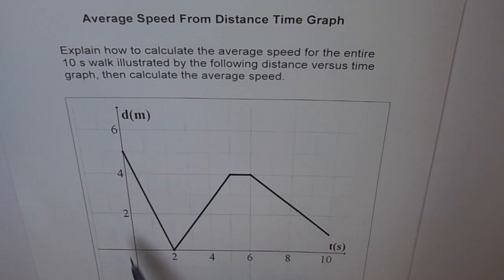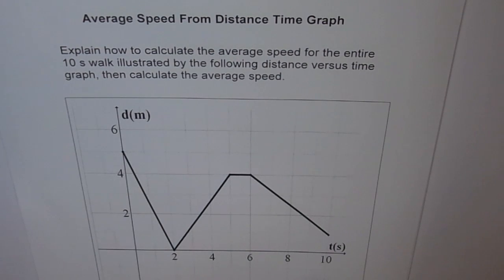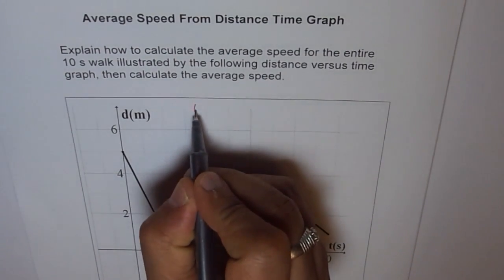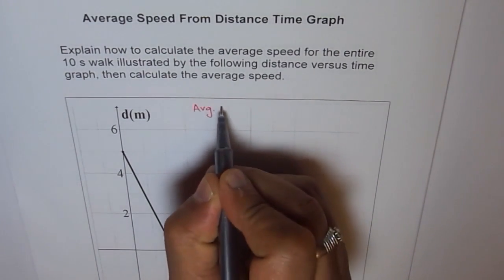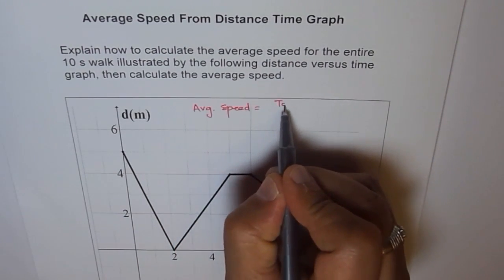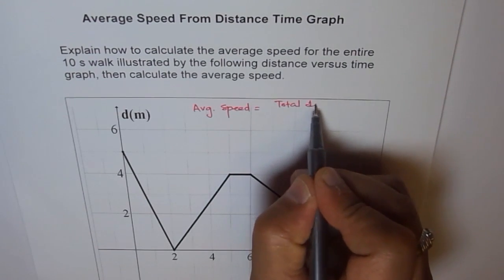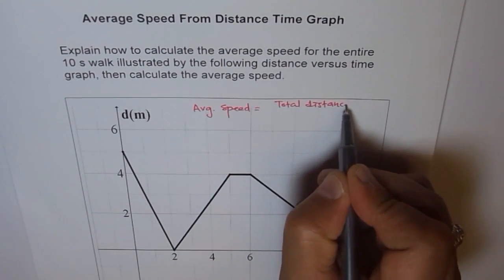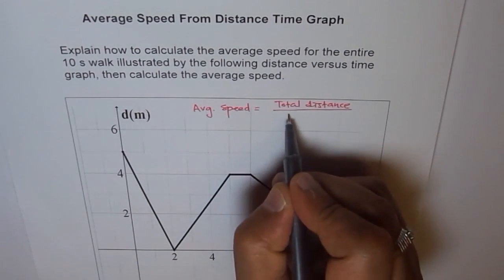When you are given a distance-time graph, can you read from it how much distance has been traveled in 10 seconds? Average speed equals total distance traveled over time taken.